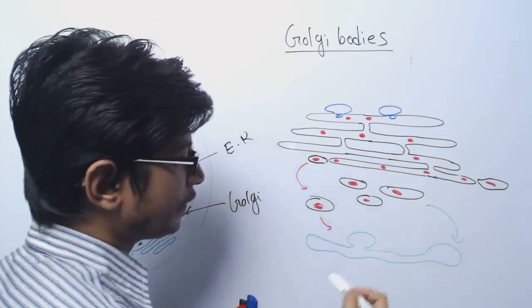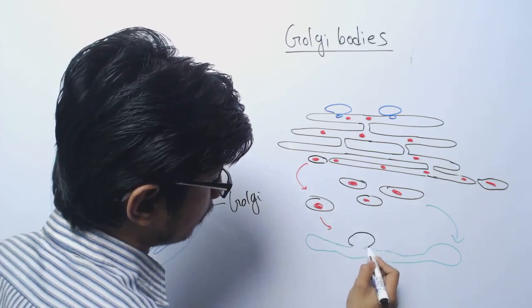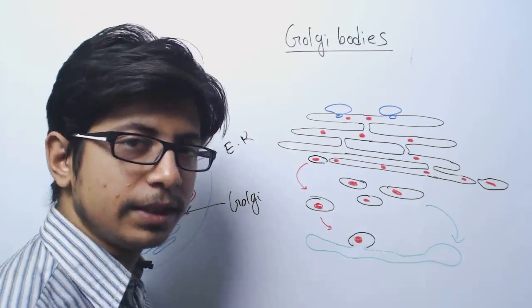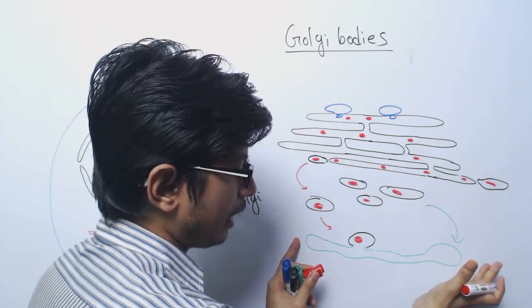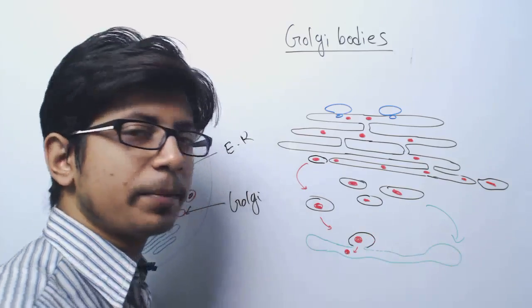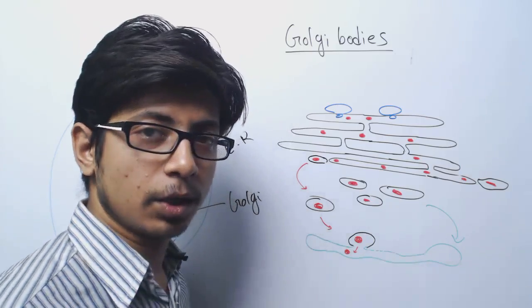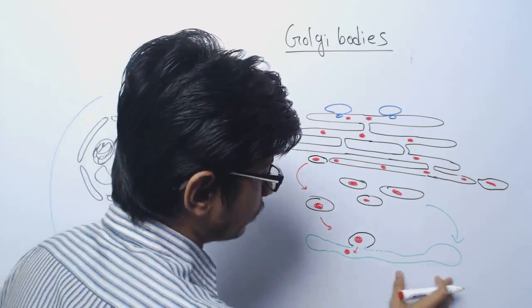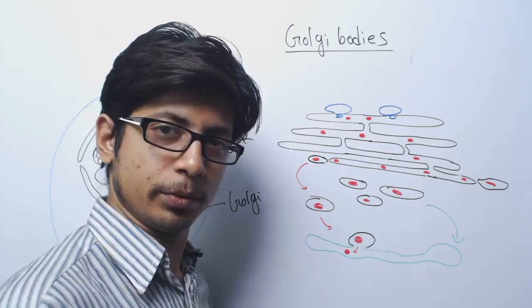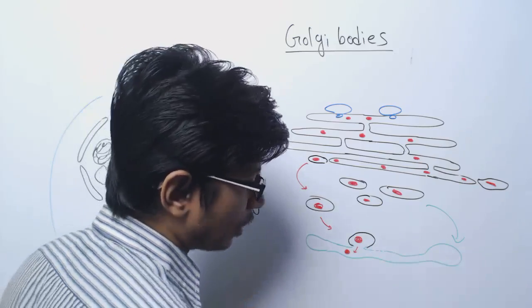All these vesicles can fuse with the cisternae of the Golgi apparatus. Once fused, that protein is delivered inside the Golgi apparatus. Inside the Golgi apparatus there are enzymes and chemical factors which will start to modify the proteins. For example, mannose residues or glycan residues will be added to make a glycoprotein. Once all this modification is done, those proteins keep on shuffling and being delivered inside sacs in the same manner.